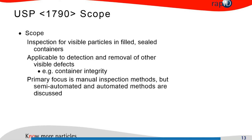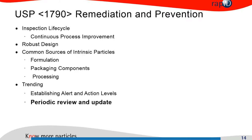The USP 1790 scope covers looking for visible particles in filled sealed containers, checking visible defects such as container integrity, and looking for particulate matter — for which you do mostly manual inspection. What Roy has called 'remediation and prevention' is the starting point of this inspection life cycle, and most of what I will talk about today focuses on the staged approach of controlling particulate matter at different points in the product life cycle.